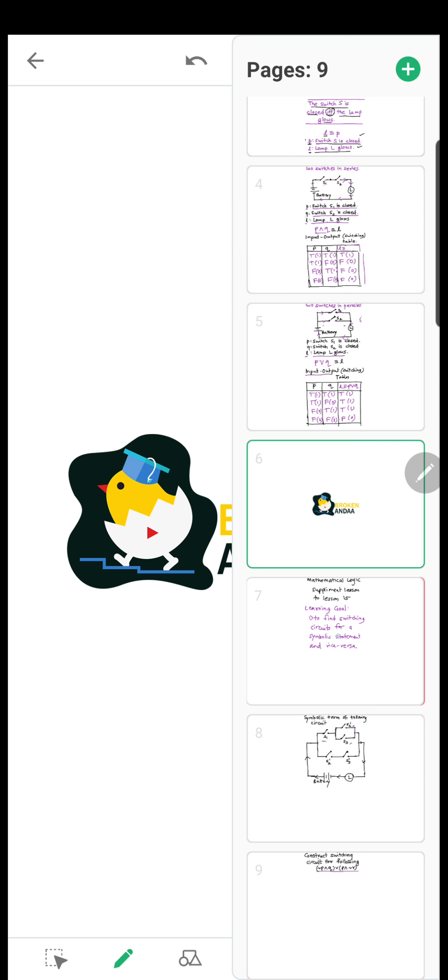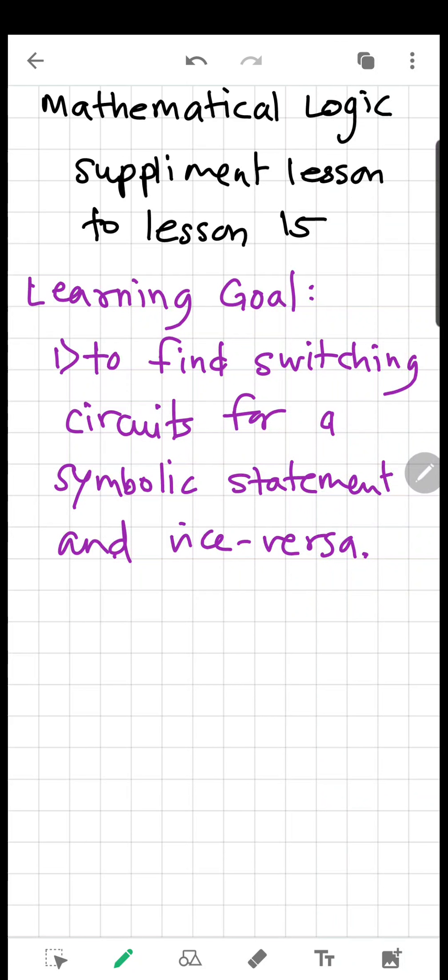Welcome all. This is a supplement lesson to lesson 15 of chapter mathematical logic. That is to find switching circuit for a symbolic statement and vice versa.